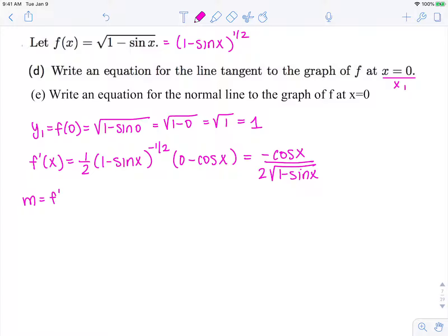So now our slope of our tangent line is going to be our derivative at 0, which is negative cosine of 0 over 2 square root 1 minus sine of 0, which is negative 1 over 2 square root 1, or negative 1 half.